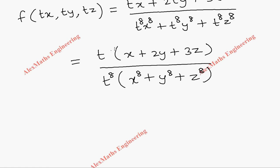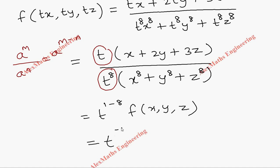Using the rule a power m by a power n, it is nothing but a power m minus n, so we are going to apply this rule for these two terms. It will become t power 1 minus 8, and the rest of the term is nothing but f of x comma y comma z. So we are left with t power minus 7 into f of x comma y comma z.